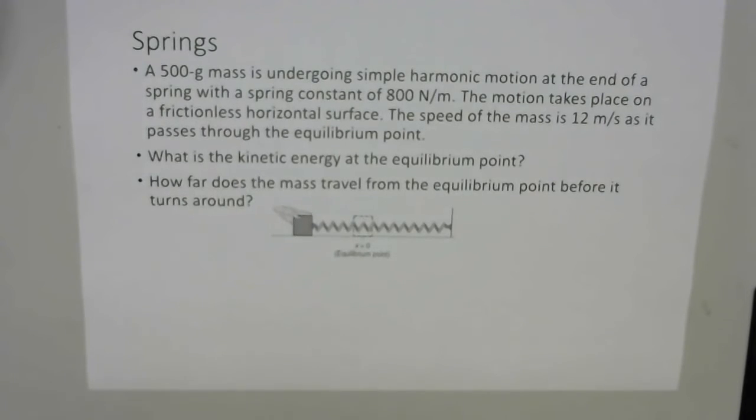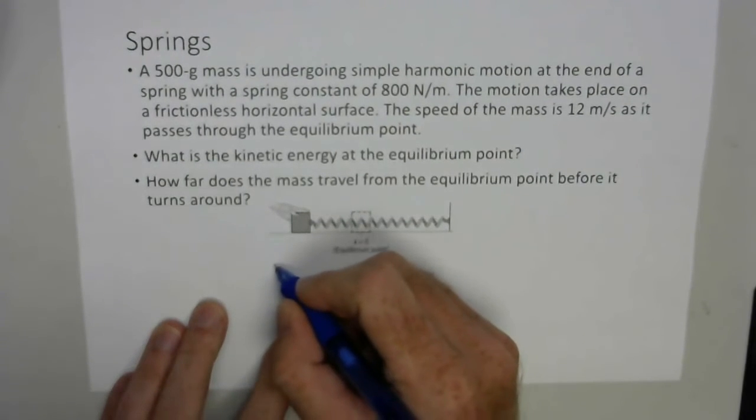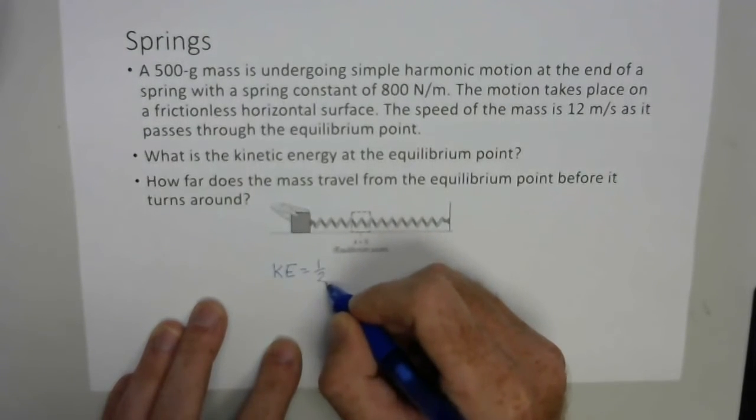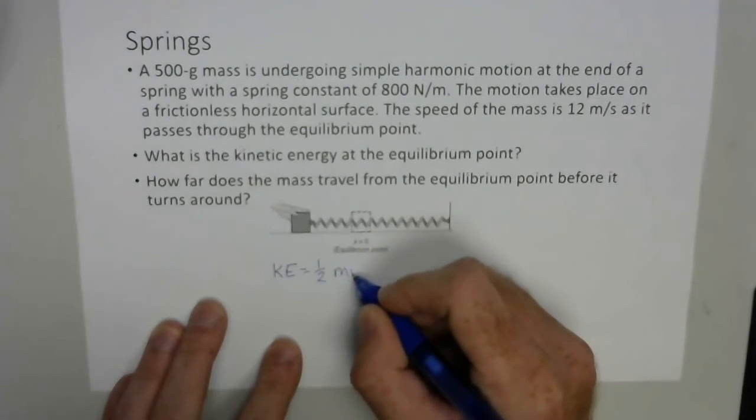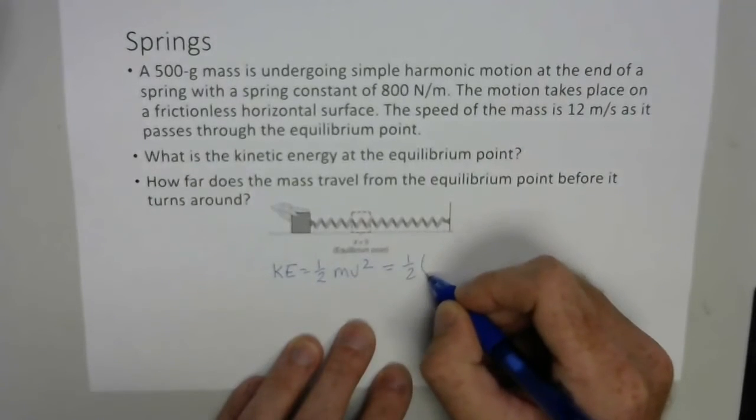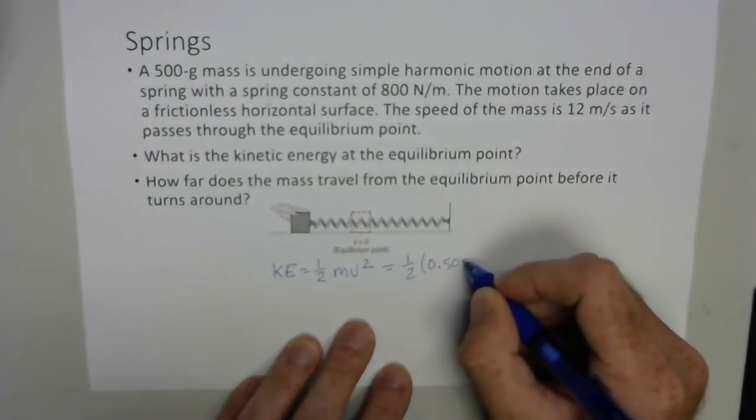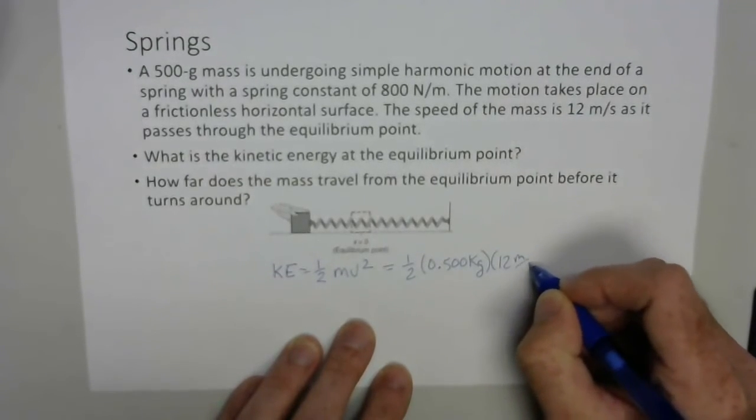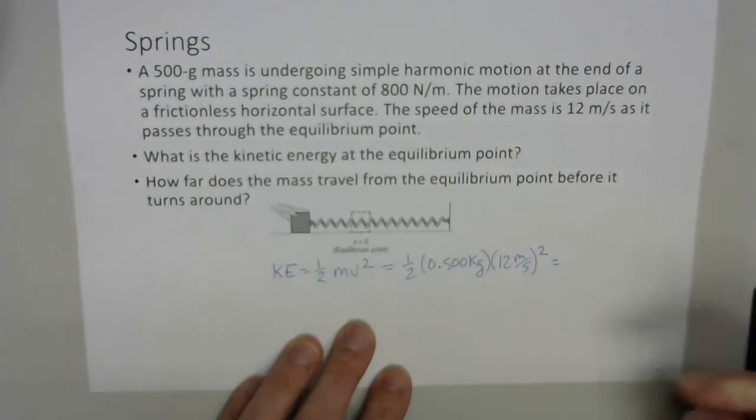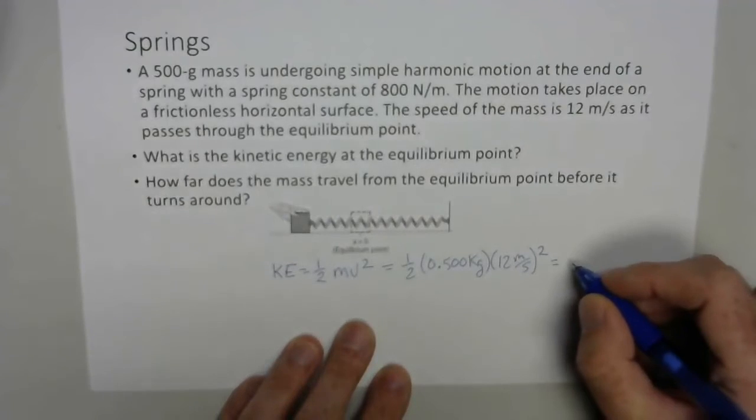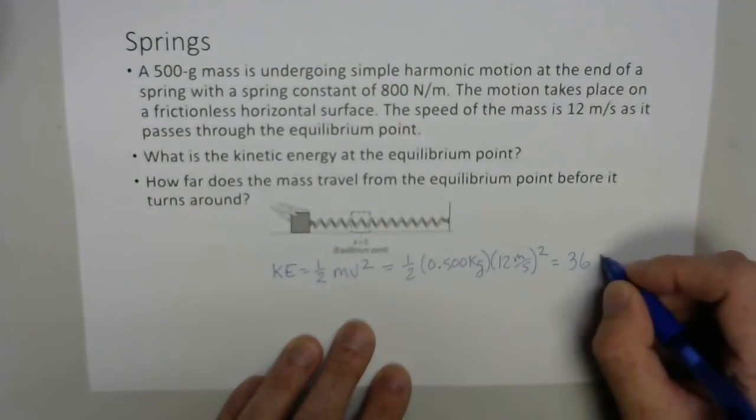So we want to know the kinetic energy at the equilibrium point. Okay, that is when all the potential has been converted to kinetic, it's going to be one-half mv squared. And so you're going to just plug in your numbers, one-half the mass. We're going to go to kilograms, so 0.500 kilograms times the velocity of 12 meters per second, and it's squared. So 0.5 times 0.5 times 12 squared is going to be 36 joules.